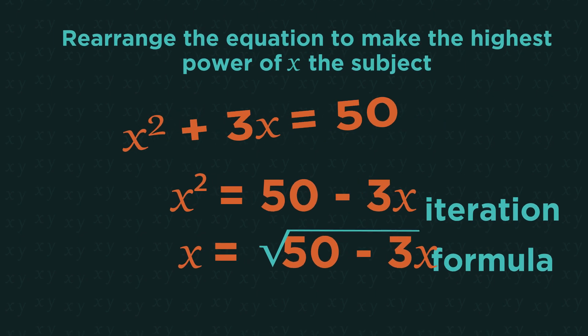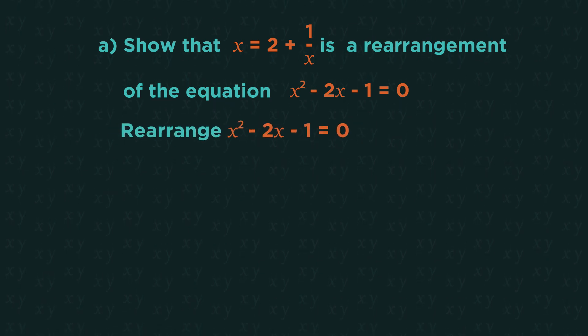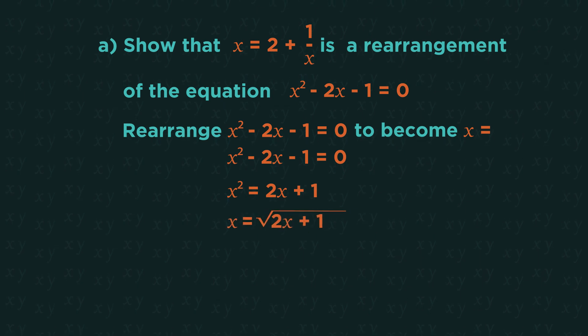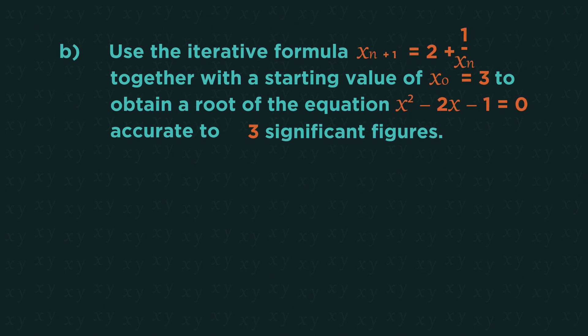Let's have a look at another example. In part a, we have to derive the iteration formula from the starting equation. This just means that we need to rearrange the first formula to become x equals. Make x square the subject first. We could square root everything. But this isn't what the question wants. So instead, this time, we're going to divide everything by x. And that's the iteration formula.